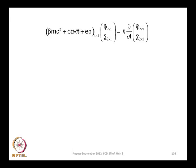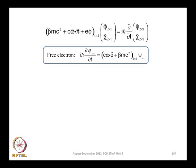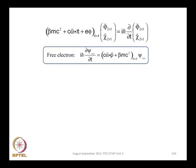We begin with C alpha·pi + e·phi. To illustrate the method, we first take the simple case of a free electron, so the vector potential and scalar potential phi do not appear. The Hamiltonian is just C alpha·p + beta·mc², where pi reduces to p since there is no vector potential, and the term e·phi is also missing. Even for the free electron, you already have the odd operator alpha and the even operator beta.